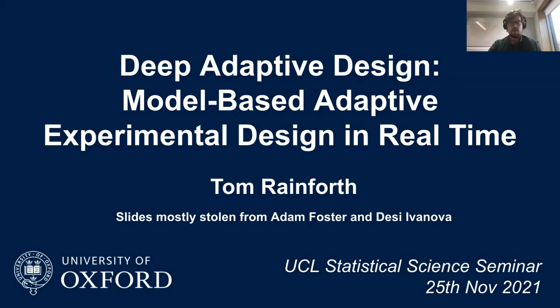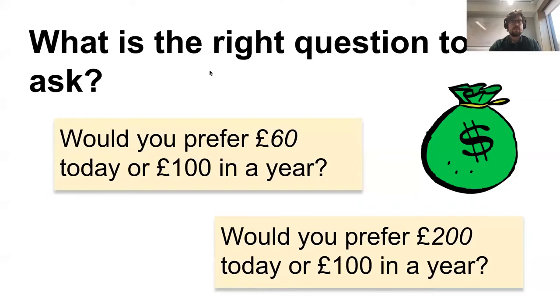What I'm going to be talking about today is design — how can we design experiments in a way that's maximally informative. I'm going to start with an example to give you an idea of what I mean. Imagine we're a psychologist trying to figure out people's subjective value of money in the presence of delays. We might ask them, would you like £60 now or would you prefer £100 in a year?